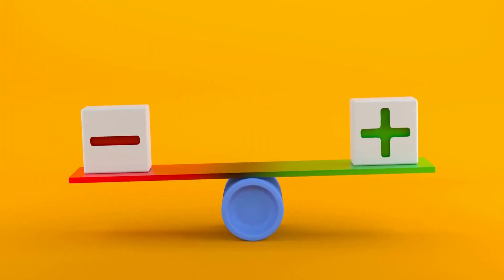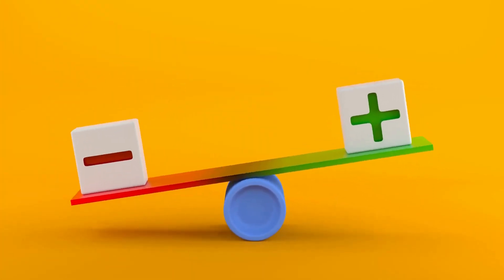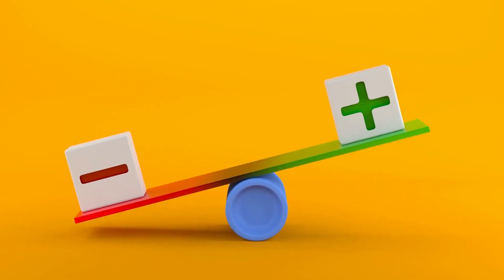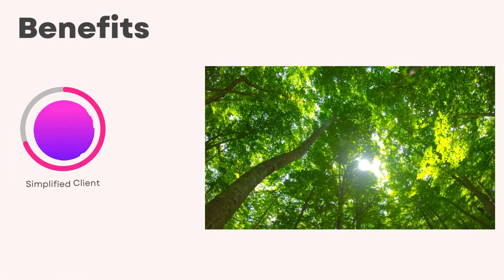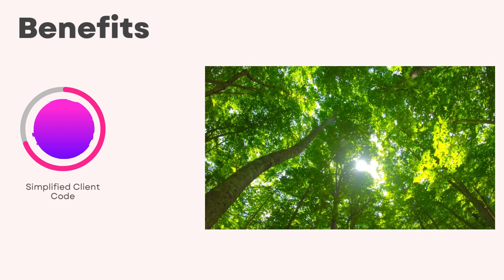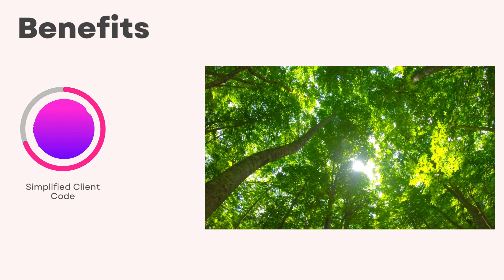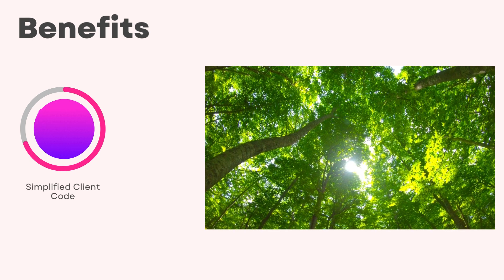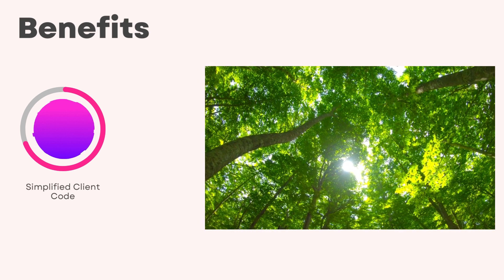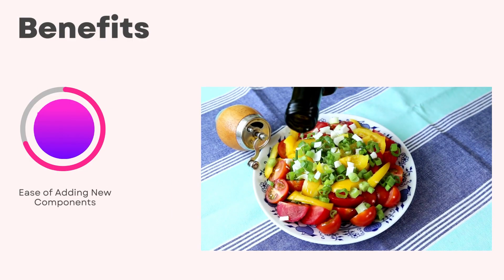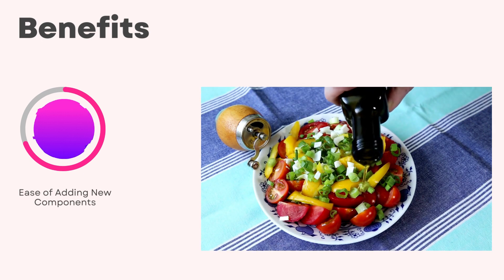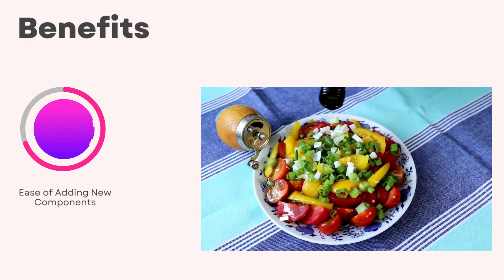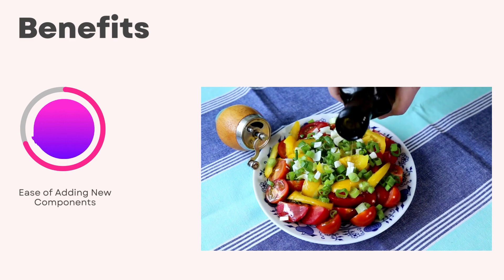Let's talk about benefits and drawbacks. Like every design pattern, the composite pattern has its advantages and also pitfalls. First, simplified client code: the composite pattern simplifies the client code by allowing it to interact with individual objects and their compositions in the same way, much like you would care for a whole tree or a single leaf similarly. Second, ease of adding new components: with the composite pattern, it's easier to add new components to the system, just as it's straightforward to add a new branch or a leaf to a tree.